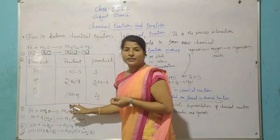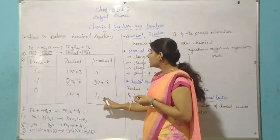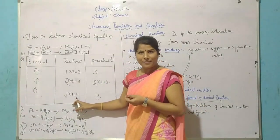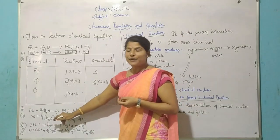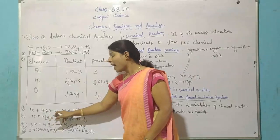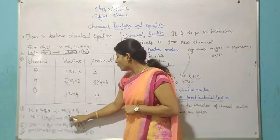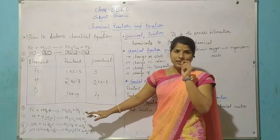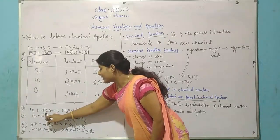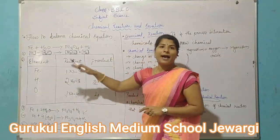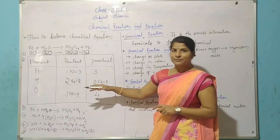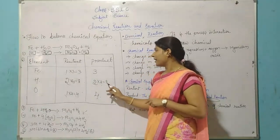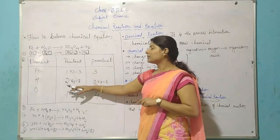The highest element count is oxygen with 4. So on the reactant side we balance oxygen: 1 × 4 = 4. We write the equation as Fe + 4H2O → Fe3O4 + H2. Now we check: hydrogen on the reactant side is 2 × 4 = 8, and on the product side 2 × 4 = 8, so reactant and product sides are both balanced for hydrogen and oxygen.